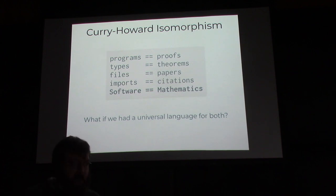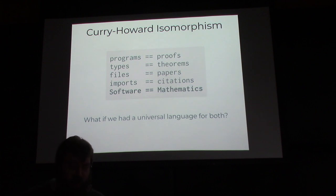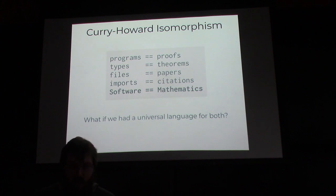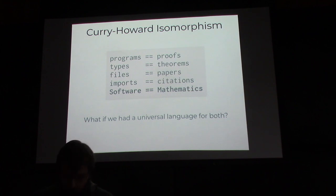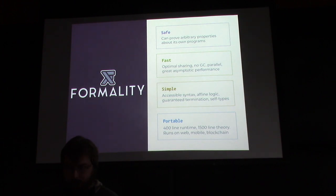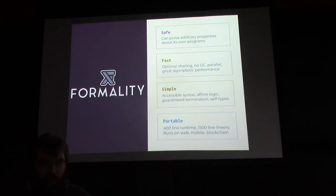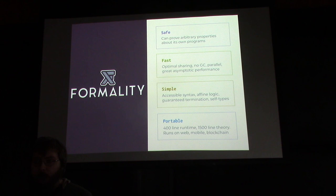It's kind of underutilized on the software side because not a lot of people program in dependently typed languages, and also underutilized on the mathematics side because a lot of mathematics is done manually in LaTeX. We're really interested in seeing — if we have this isomorphism between mathematics and programming — shouldn't we have tools that allow programmers and mathematicians to collaborate in a single language? That's basically the goal with Formality: a useful programming language for practical software and a useful language for exploring mathematics.